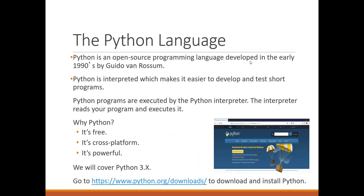Once you have the flowchart, you can start programming. In this course we are covering Python. Python is an open-source programming language developed by Guido van Rossum. Open source means you can easily download it without paying any money. Why should we use Python? First, it is free. Second, it can be used on several machines — it is cross-platform. Also, it is powerful and can be applied in many fields: data science, web browsing, and many other areas.